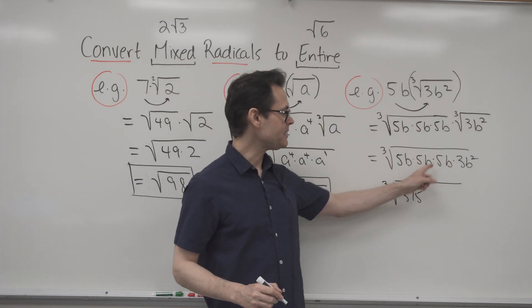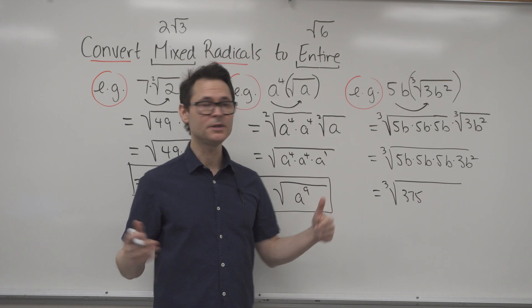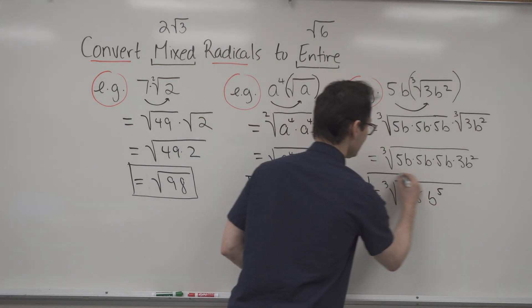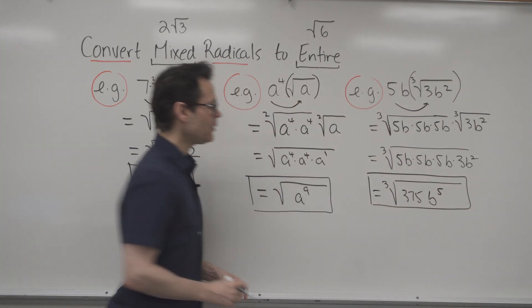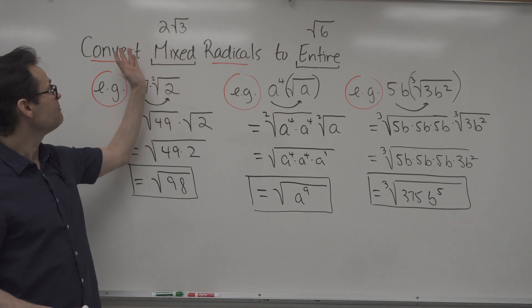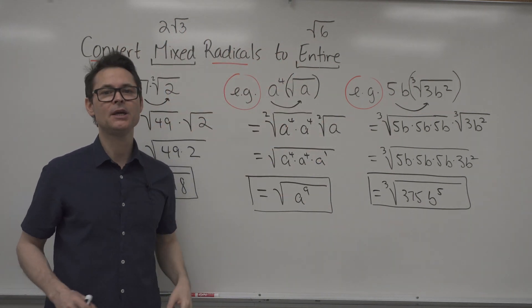And B times B times B is B cubed, times B squared is B to the 5. And there's a fine answer showing the entire number inside the radical going from mixed to entire radicals.